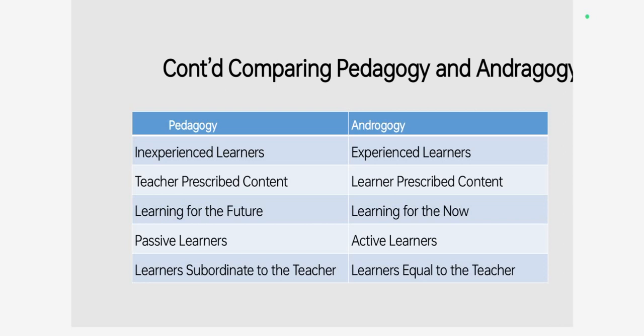In pedagogy, learners are subordinate to teachers. But in the case of andragogy, learners are equal to the teachers — there should be a kind of friendliness, as they are almost equal in age and experience. The facilitator might be better educated, but that does not mean the facilitator is always superior in knowledge and skill. In some cases, adults have more knowledge, experience, and skill than the facilitators do, and that should be kept in mind.